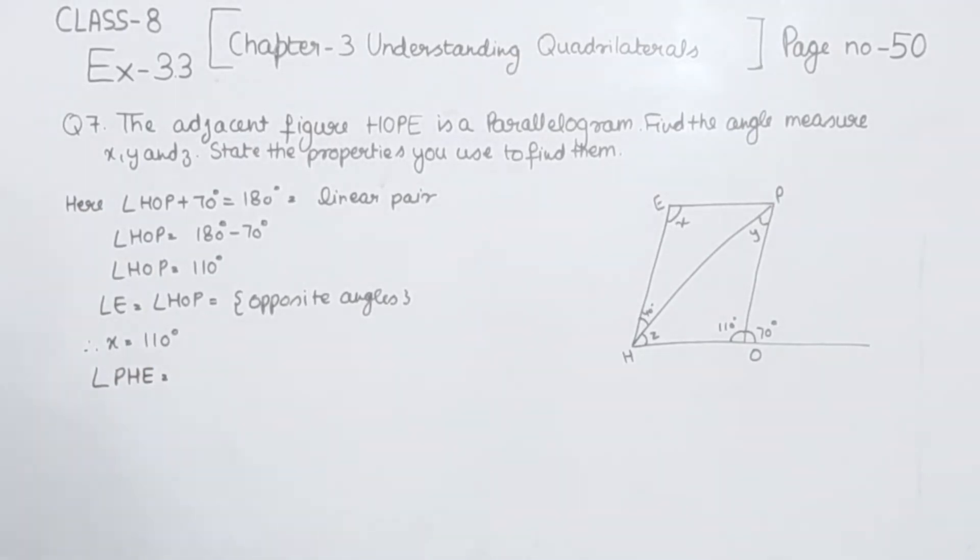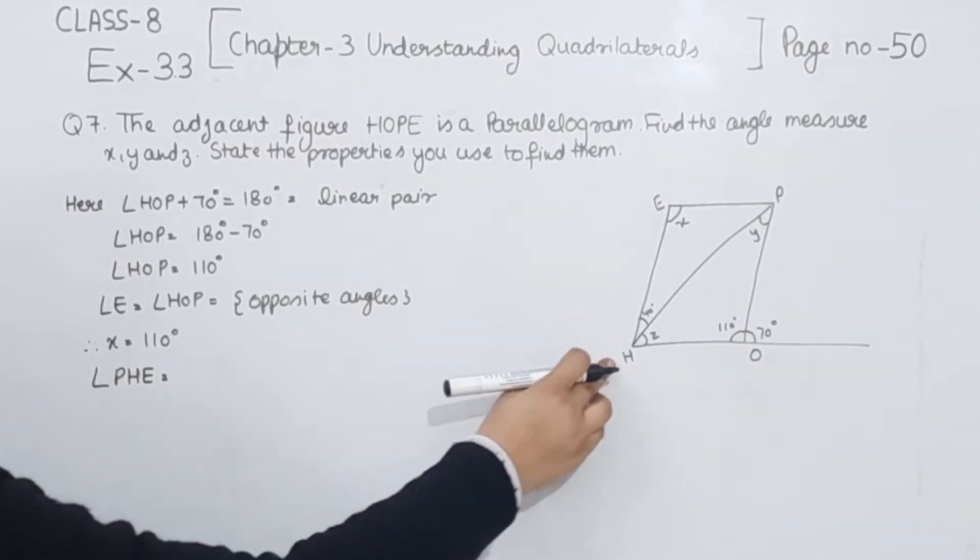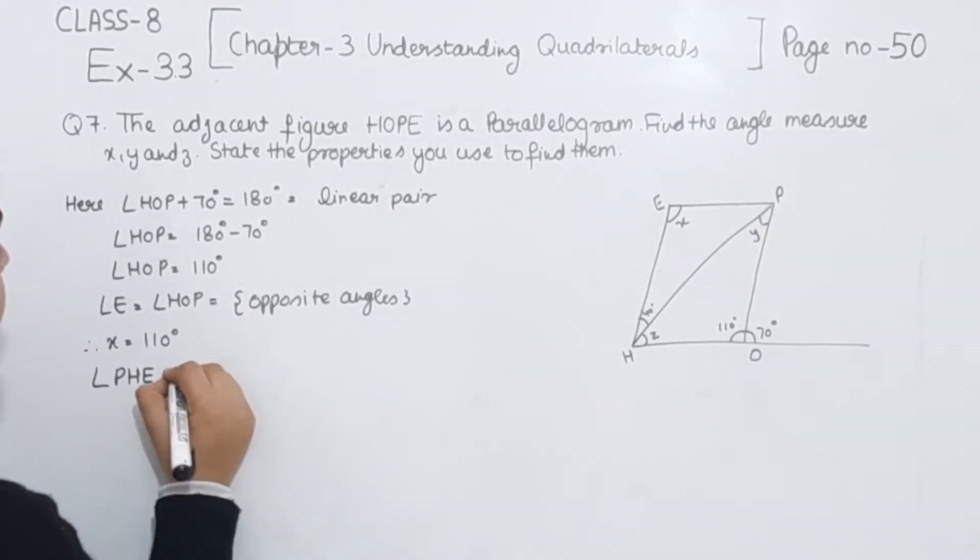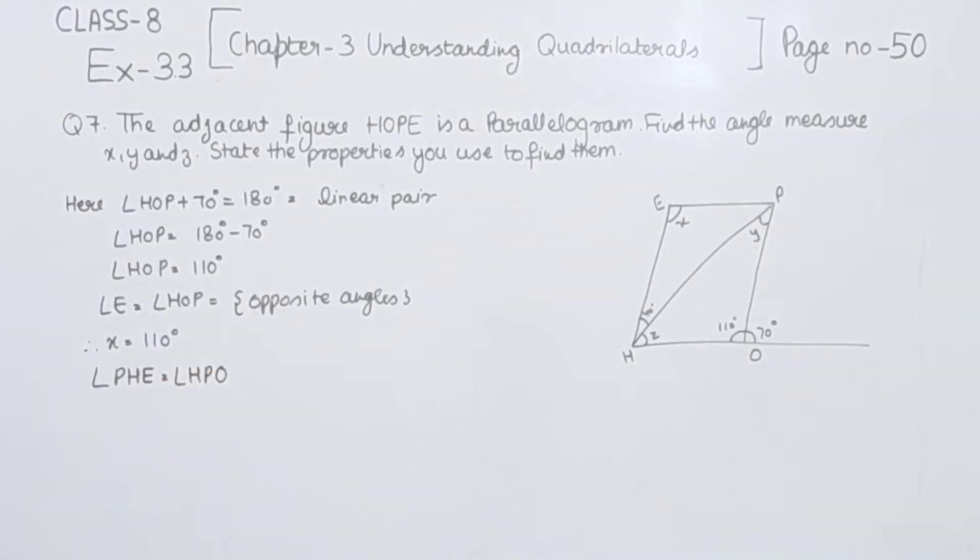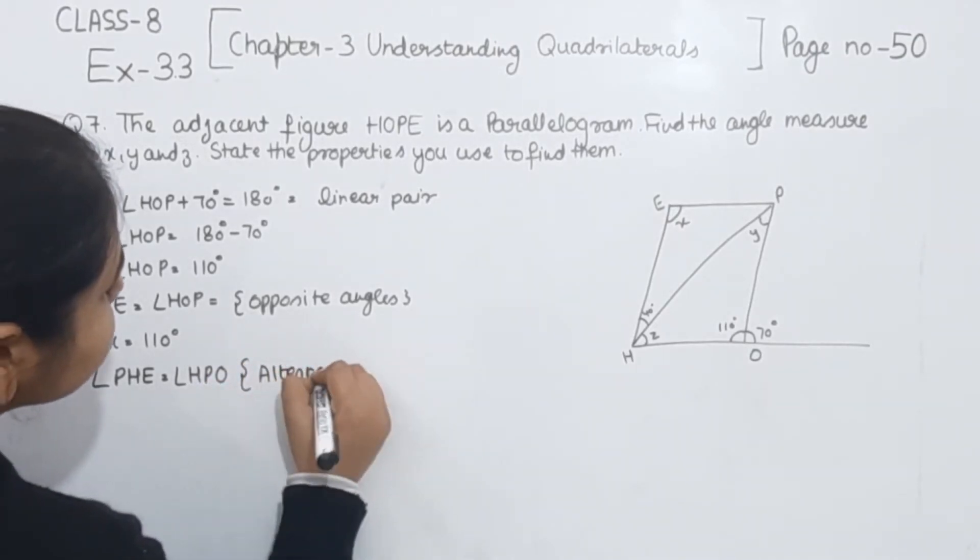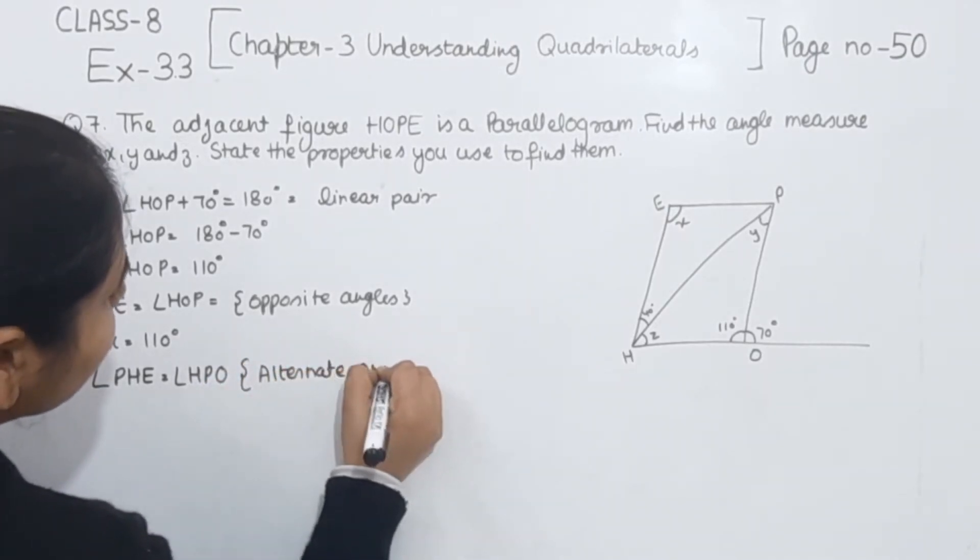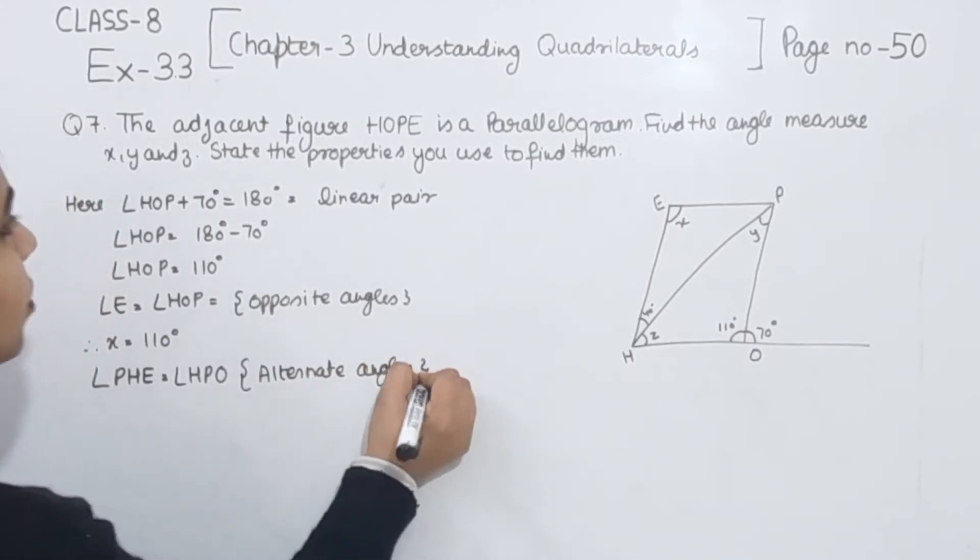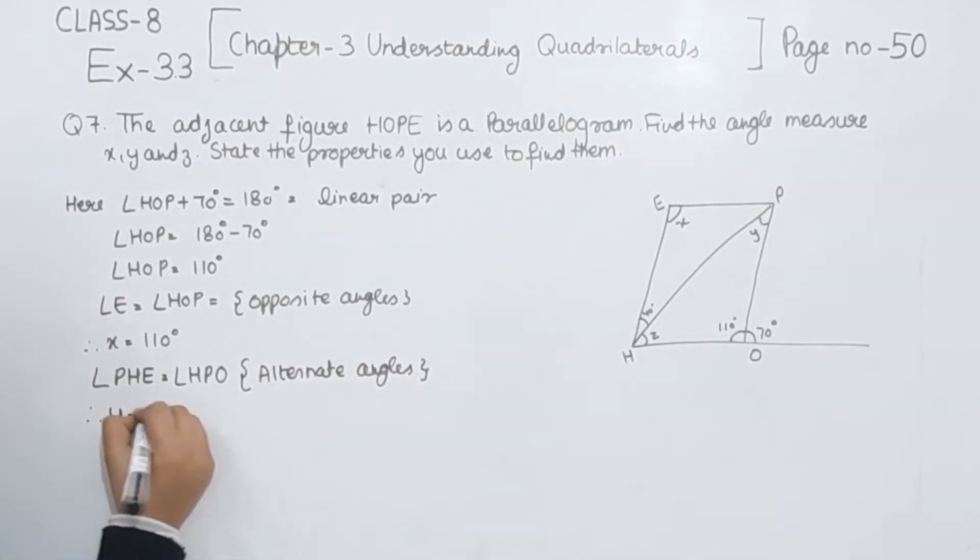Now this angle is equal to angle HOP. They both are equal because they are alternate angles. So if they are alternate angles, then Y is equal to 40 degrees.